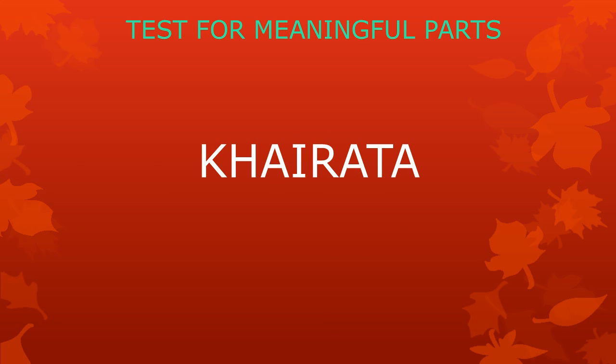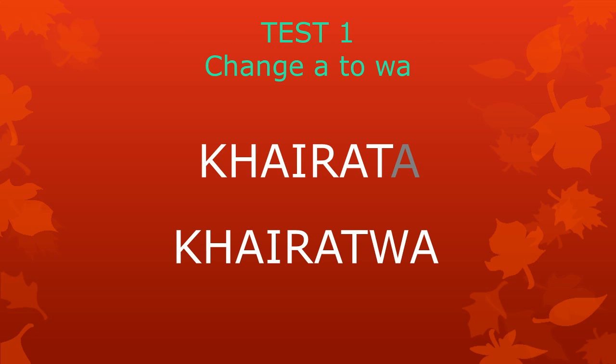Let's take another word and find its meaningful parts. The word we will test now is kairata. What can we do? We can start by changing a to wa. Then we get kaira twa. This is okay — this word exists. So, a is a meaningful part.